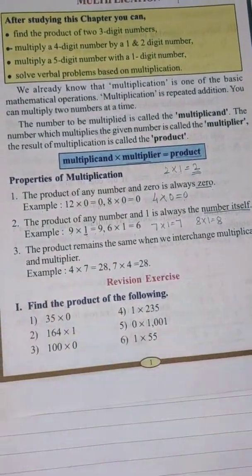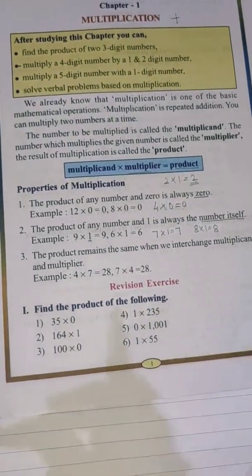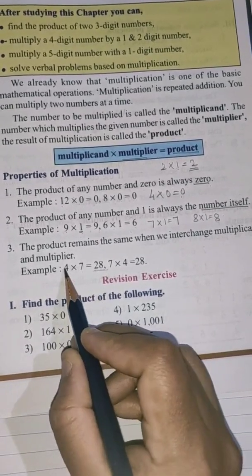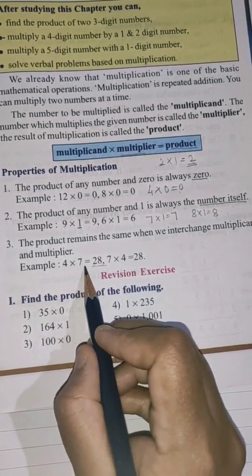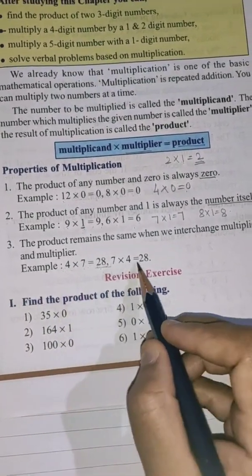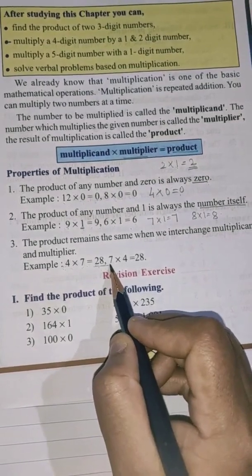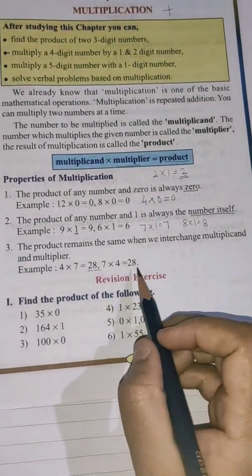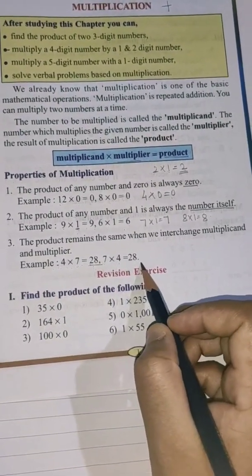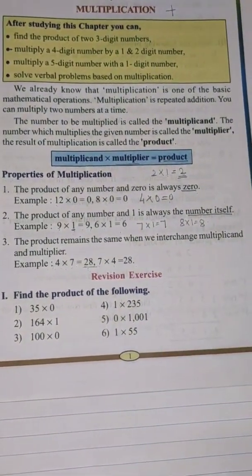The third property is: the product remains the same when we interchange the multiplicand and the multiplier. Here you can see, 4 into 7 is equal to 28. If you interchange this — 7 into 4 — the answer is still 28. So 4 sevens are 28 and 7 fours are 28. The product remains the same when we interchange the multiplicand and the multiplier. These are the three properties of multiplication.